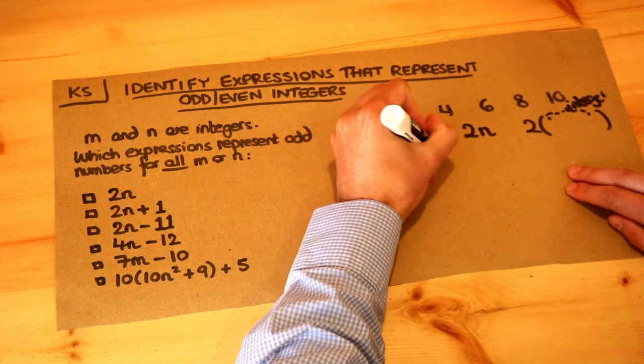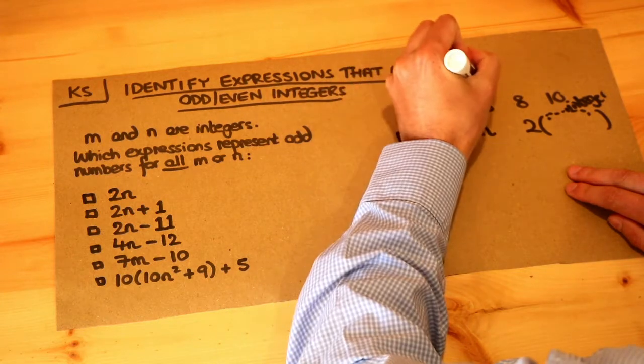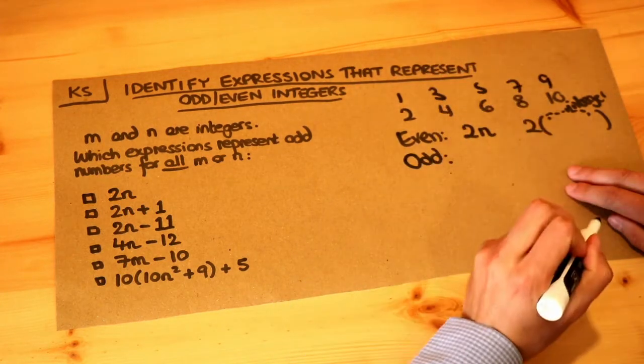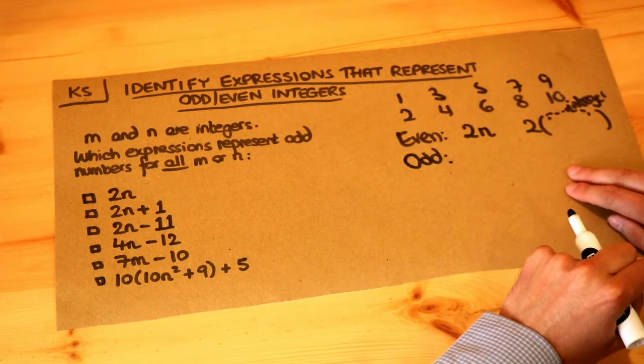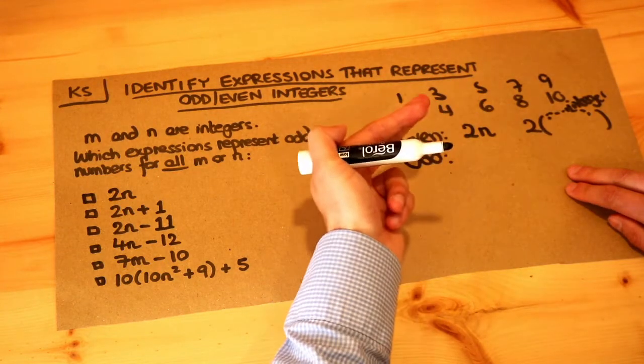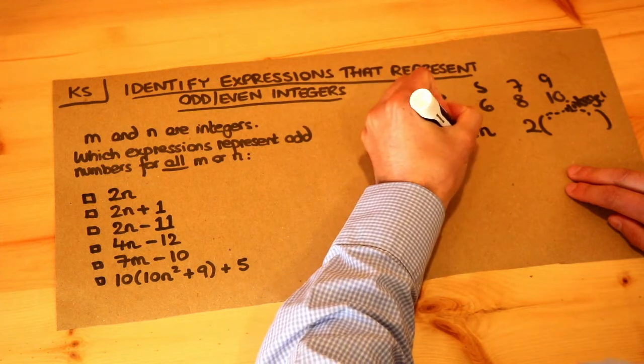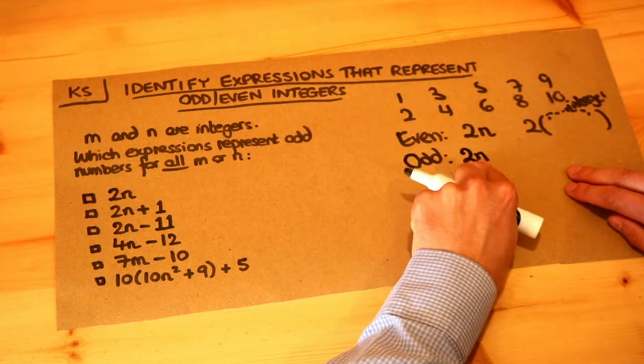Now what about odd? If we look at some odd numbers, so 1, 3, 5, 7, 9, what could we say about all of these odd numbers? Well, they're all 1 more than an even number. So for example, if we had an even number like 2n, where n is an integer,